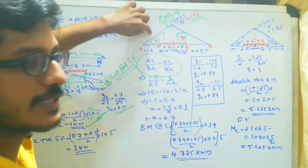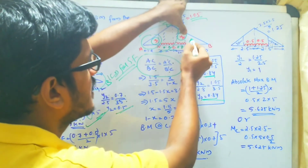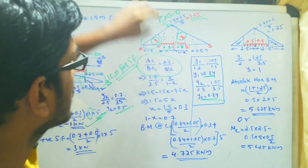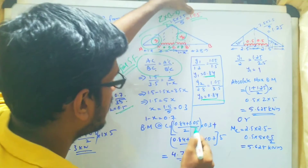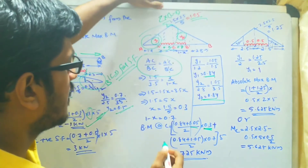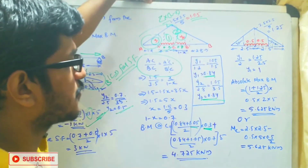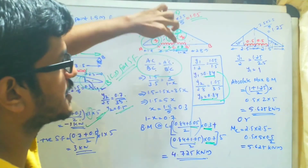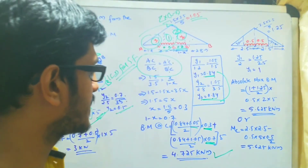Y1 and Y2 are found using similar triangles. Both Y1 and Y2 come out to 0.84. The bending moment at C is the sum of two trapezium areas: first area is (0.84 + 1.05) / 2 × 0.3 (the A-dash-C distance), and the second area is (0.84 + 1.05) / 2 × 0.7 (the B-dash-C distance). The whole multiplied by the UDL magnitude of 5, giving 4.725 kilo Newton meter as the bending moment at C.